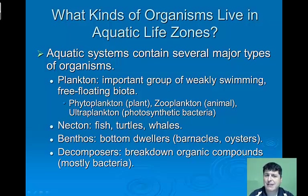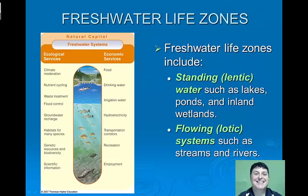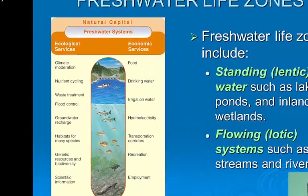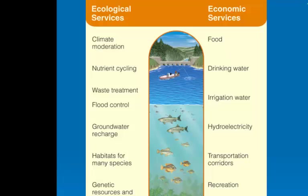We'll also have slime molds and some aquatic fungus. Our freshwater life zones include standing water such as lakes, ponds, and inland wetlands, as well as flowing systems such as streams and rivers. These freshwater systems provide a number of ecological services including climate moderation, nutrient cycling, wastewater treatment, and groundwater recharge. In addition, they provide economic services like production of food in the form of fish and shellfish, drinking water, water for irrigation, and water for recreation.